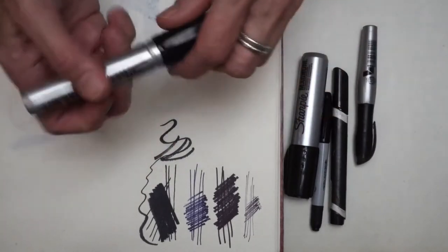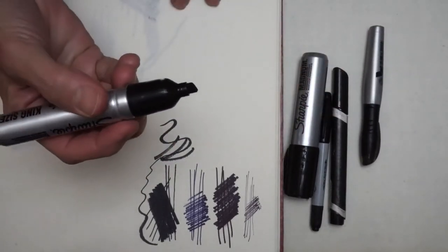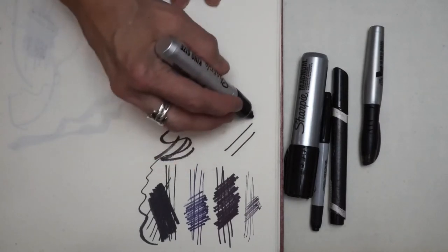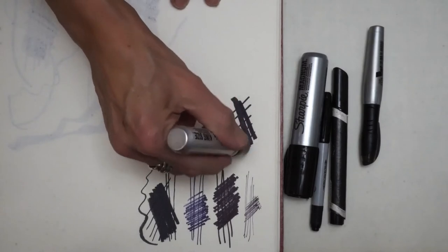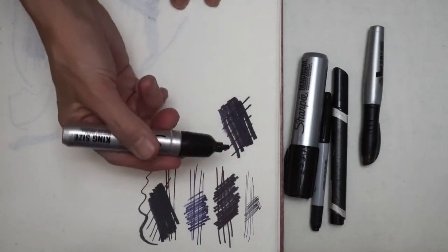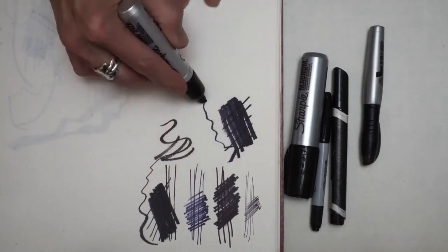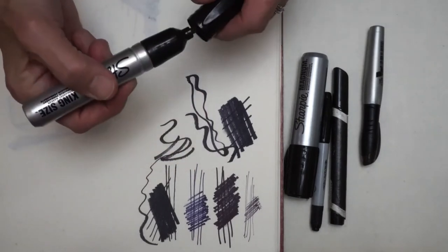The next one is the king size Sharpie, another chisel tip just a little bit bigger. Same features: I can use the very tip, I can use the edges, and I can use the end for great coverage. Again, very easy to change the line weight by moving the angle that you're holding the marker at.